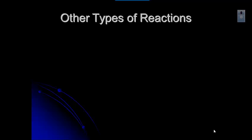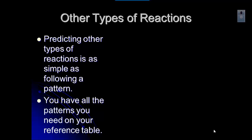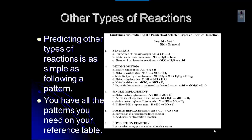Now that we've learned how to do single replacement and double replacement reactions, we need to look at the other types. Predicting the other types of reactions is straightforward because if you look in your reference table, you can see a whole set of sample reactions you can use to predict the products. You'll need to look at the information about your reaction, write the reactant side, and then compare it to the five types and subtypes to figure out which one it is.